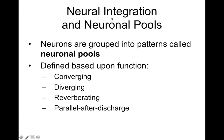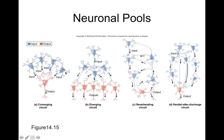Now we're going to talk about neural integration and neuronal pools. Neurons are grouped into patterns called pools, and these patterns can occur in different ways: converging, diverging, reverberating, and parallel after discharge. A converging circuit is when lots of neurons all converge onto one or fewer neurons. Think about this as funneling of information — if each neuron carries a separate piece of information and they're all funneling together to one output neuron, then you're losing information.